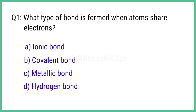Question number 1. What type of bond is formed when atoms share electrons? The right answer is option B: covalent bond.